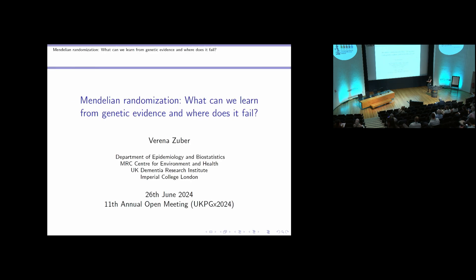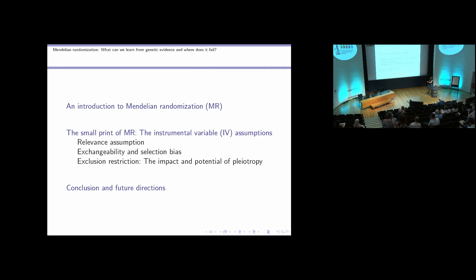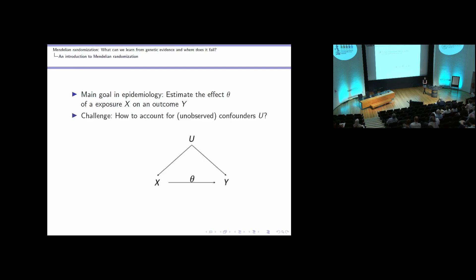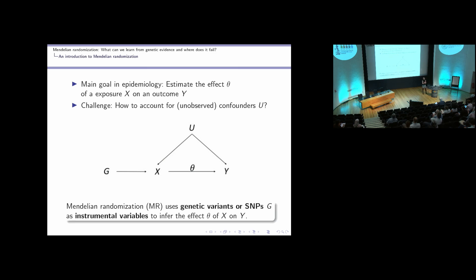The main goal in epidemiology is to estimate the effect of an exposure X on an outcome Y. The challenge is accounting for confounding factors — a confounder is a cause of both X and Y, and most of the time these confounders are unobserved. MR uses genetic variants or SNPs G as instrumental variables to infer the effect of X on Y. Our genotype is assigned randomly at meiosis when passed from parents to offspring, is fixed at conception, and remains constant throughout life — so we don't have reverse causation.